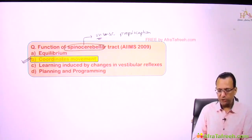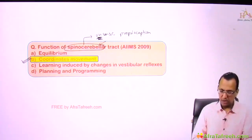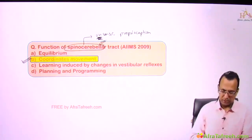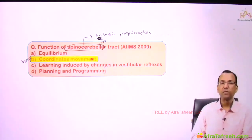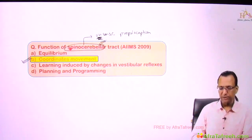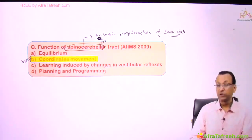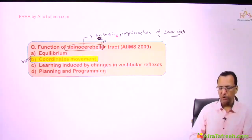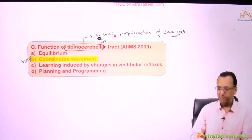Unconscious means the signal will not reach the conscious level of the cerebrum — it stops at the cerebellum level. So the answer is choice B: coordination of voluntary motor activity. To walk in a straight line, the lower limb sends unconscious proprioception, carried by the spinal cerebellar tract to the cerebellum, not the cerebrum. If it went to the cerebrum, it would be conscious proprioception.